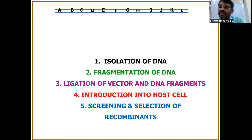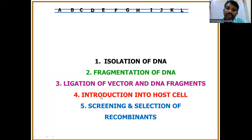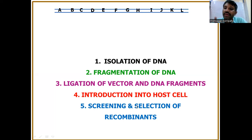Genomic DNA library construction has five steps: isolation of total DNA, fragmentation of DNA, ligation of vector and DNA fragments, introduction into the host cell to amplify them, and screening and selection of recombinants.